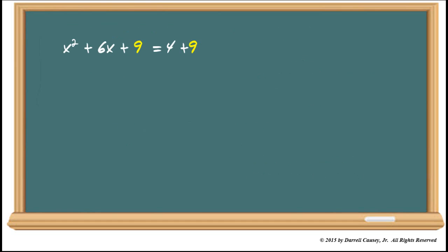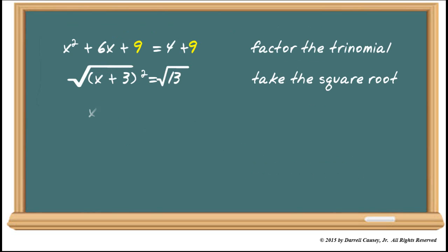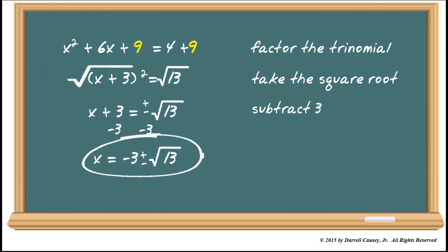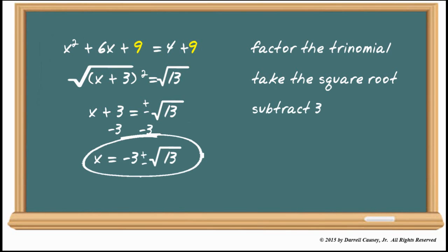That gives us the perfect trinomial on the left. And we want to add to the right to keep equality. Factor the left side and combine the right side. Now we need to take the square root of both sides. That'll give us X plus 3 equals plus or minus the square root of 13. Subtract 3 from both sides. And X equals negative 3 plus or minus the square root of 13. Awesome.